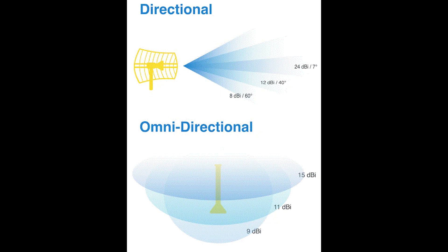Radio frequencies are generated by antennas. Selecting the right antenna for a particular network implementation is a critical consideration, one that could ultimately decide how successful a wireless network will be. In addition, using the right antenna can save you a lot of money because you need fewer antennas and fewer access points.